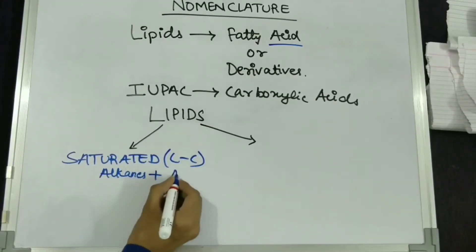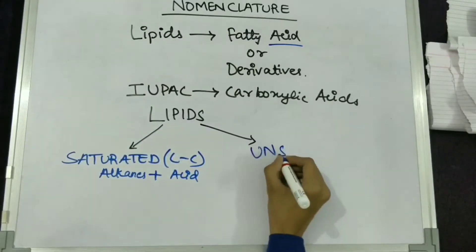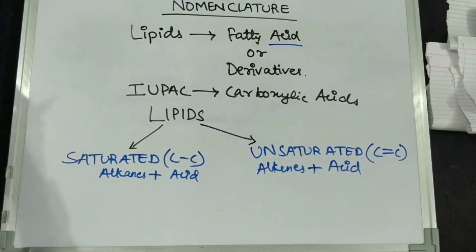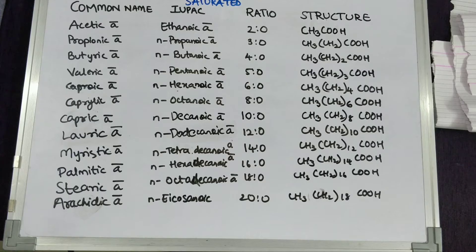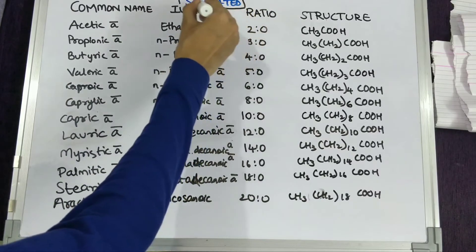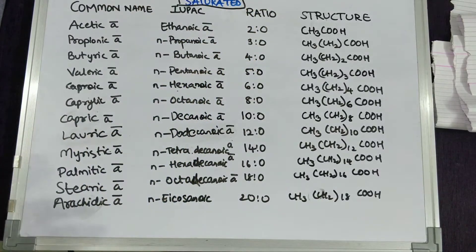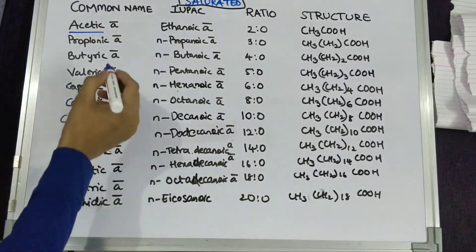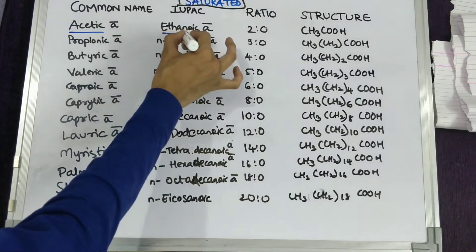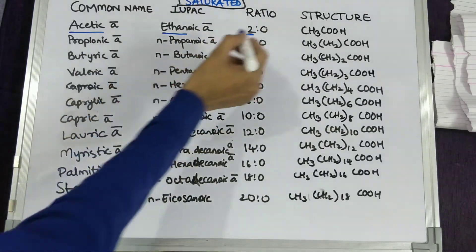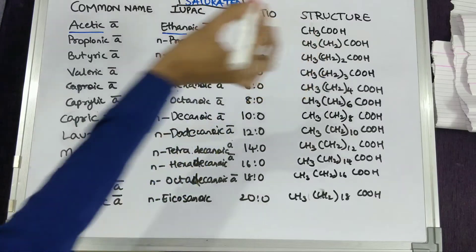Unsaturated fatty acids contain carbon-carbon double bonds, which are alkenes plus acid. Now let's have a look at examples of nomenclature of saturated fatty acids. The common name of the two-carbon fatty acid is acetic acid, while the IUPAC name is ethanoic acid. The ratio of unsaturation is 2:0, as it contains 2 carbons with 0 unsaturation.